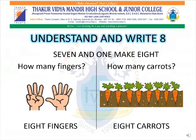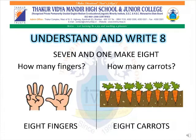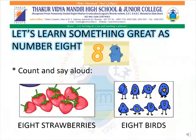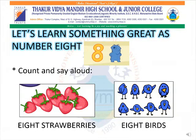Now we move on to number 8. Understand and write number 8. 7 and 1 make 8. How many fingers? 8 fingers. How many carrots? 8 carrots. Let us learn something great as number 8. Count and say aloud: 8 strawberries, 8 birds.